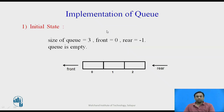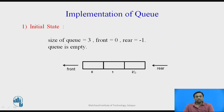Now we will see the implementation of the queue. In the initial empty state, we take the size of the queue as a[0], a[1], a[2], meaning the size is 3 so we can insert three elements at a time. At this point, front will point at a[0] and rear will point towards minus 1.